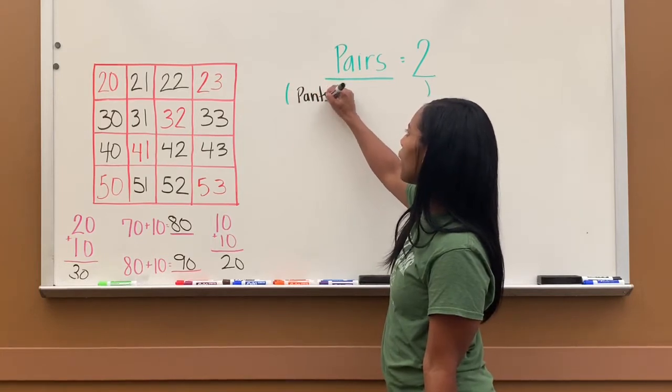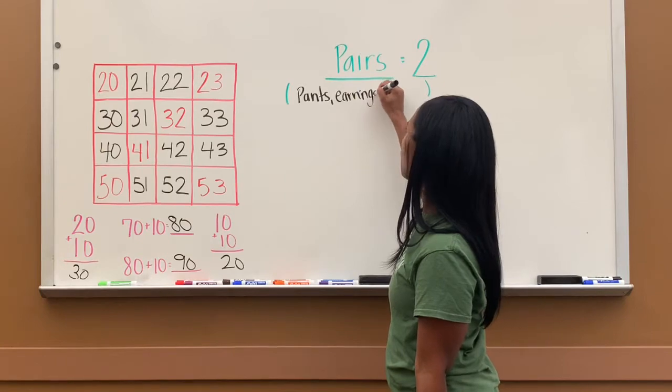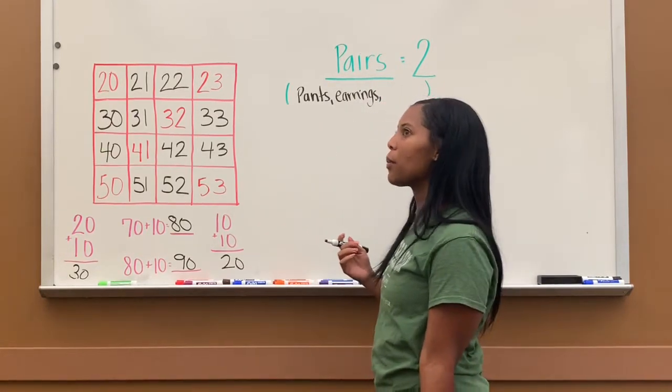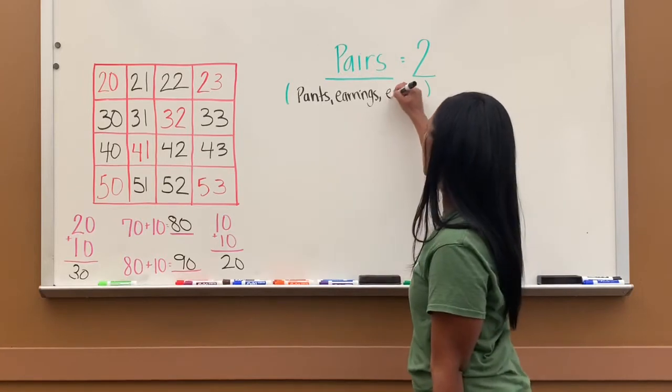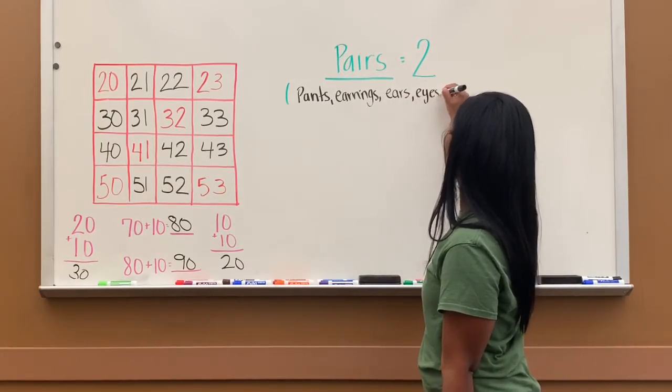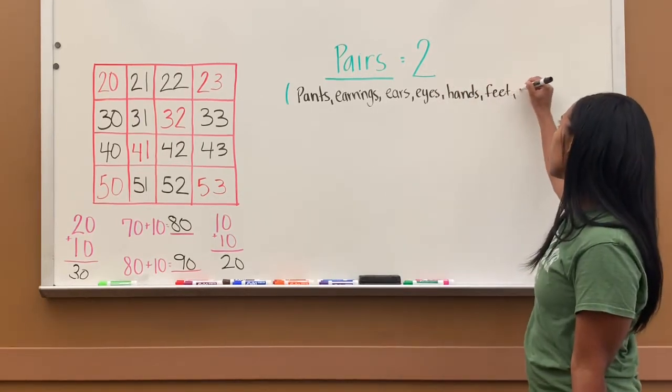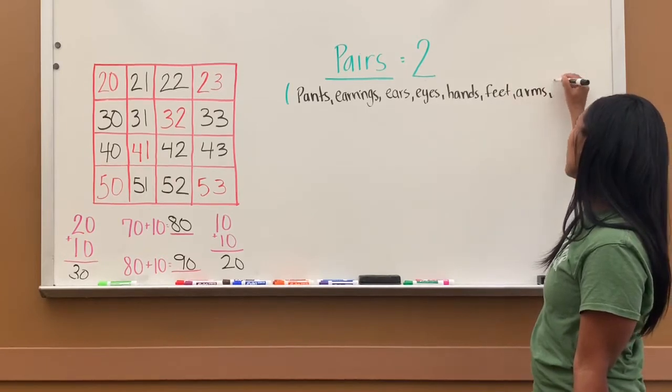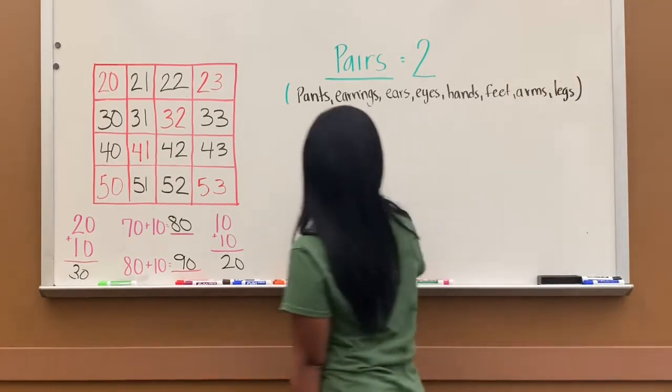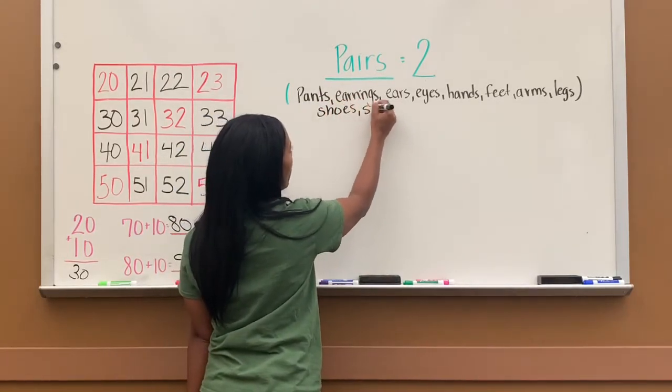I will get a pair of earrings. What do you have a pair of? What are some body parts that you have a pair of? You have a pair of ears. You have a pair of eyes. You have a pair of hands. You have a pair of feet. A pair of arms. A pair of legs. And we'll just stop there. And so here I want to put shoes as well. A pair of shoes and socks.